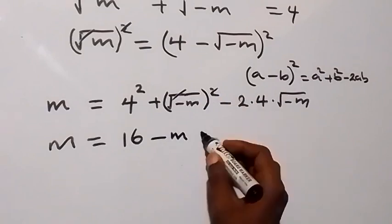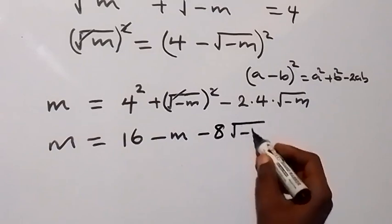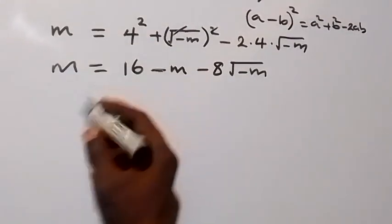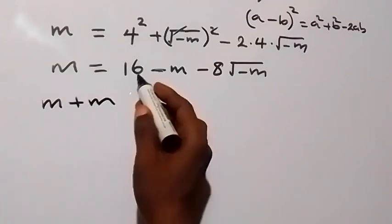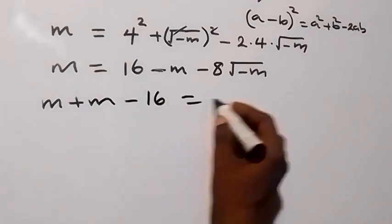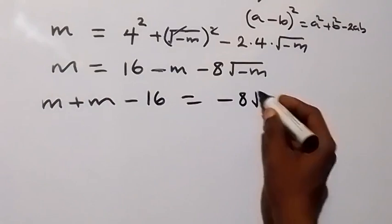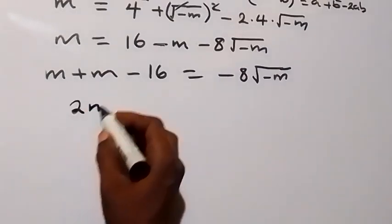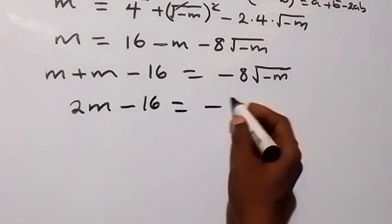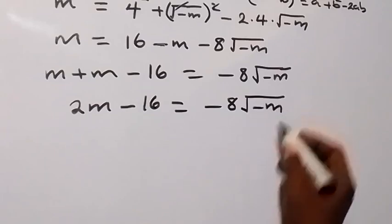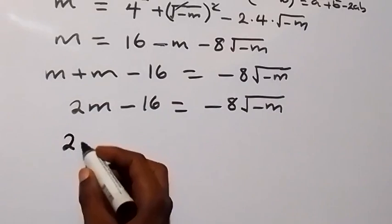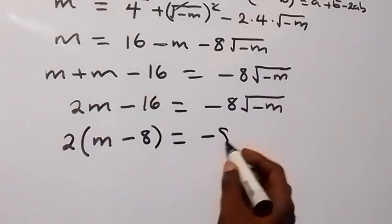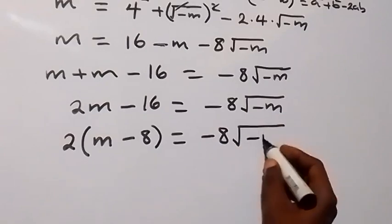Combining like terms, m + m gives 2m, so we have 2m - 16 = -8√(-m).